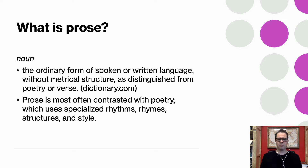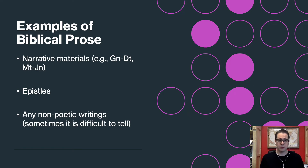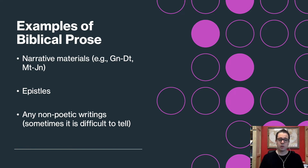Why does that matter? There are examples of biblical prose. The narrative materials in the Bible — for instance the book of Genesis, or the Gospels — are written in biblical prose. They're written in common speech; it's not poetic language, there's not poetic structure to it. It's just written in the common language of the people, and in that way it's very easy to understand.